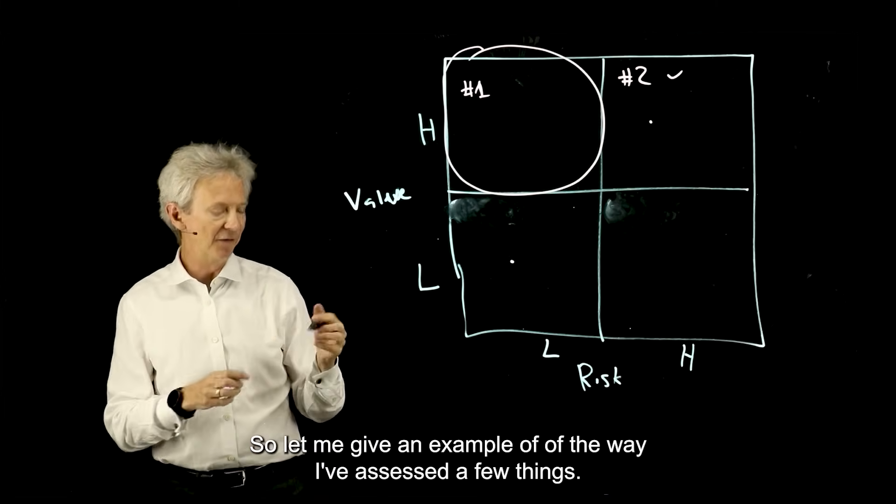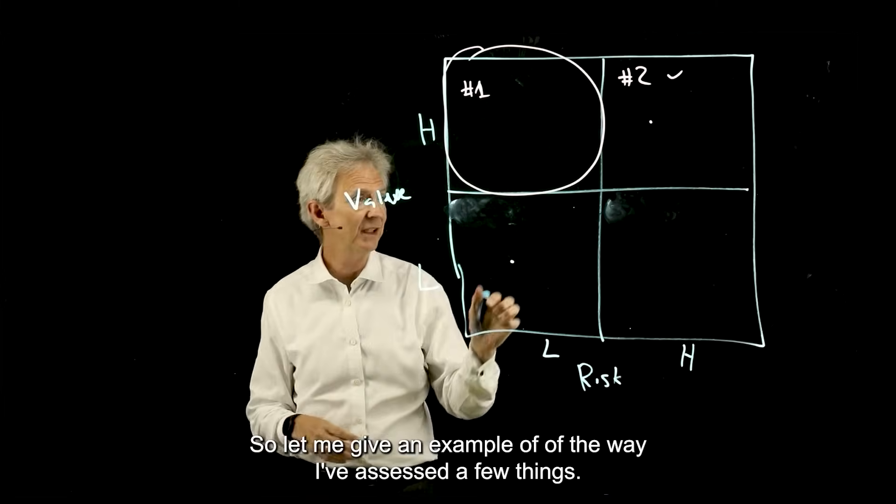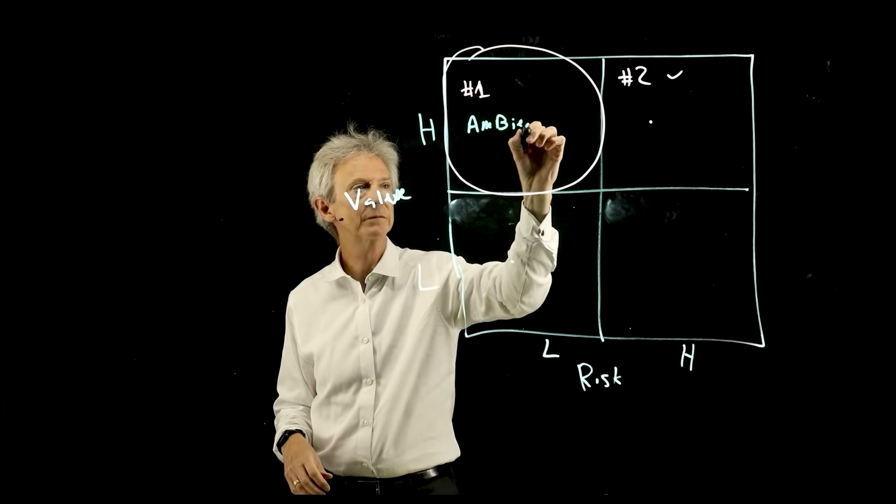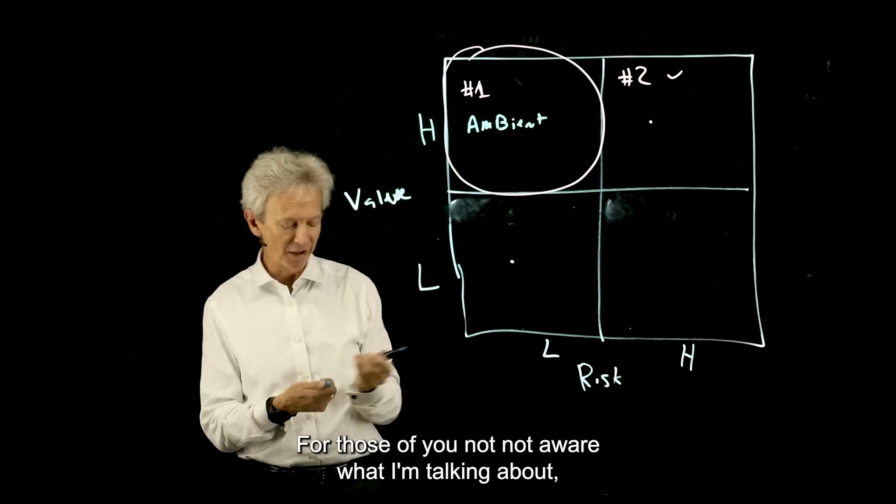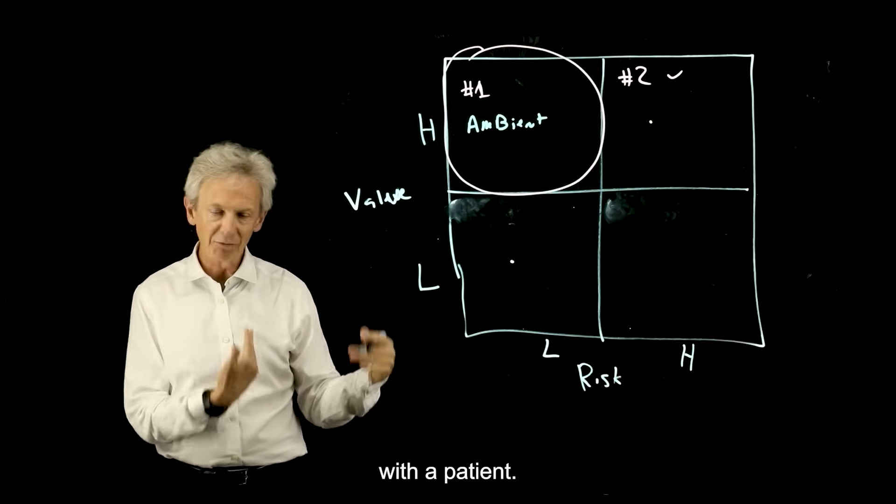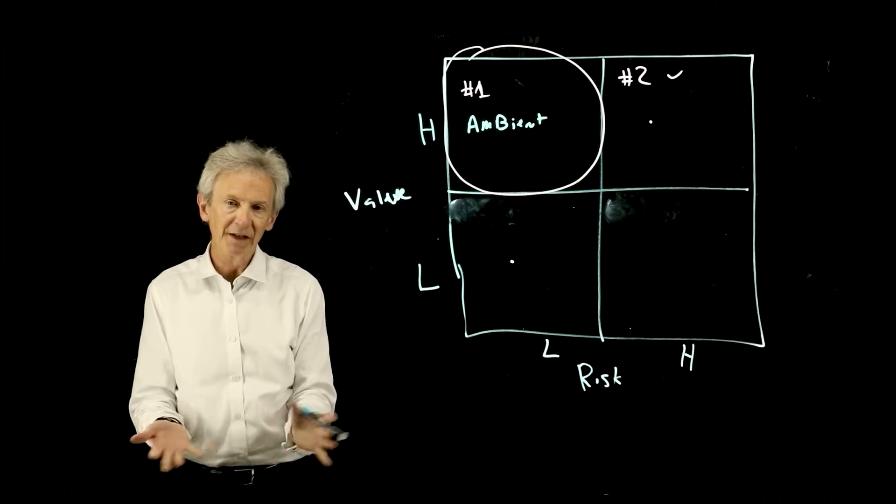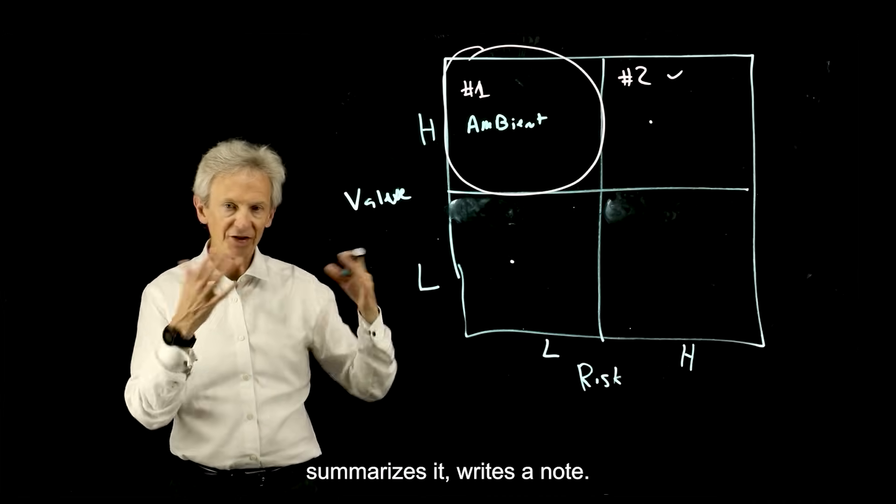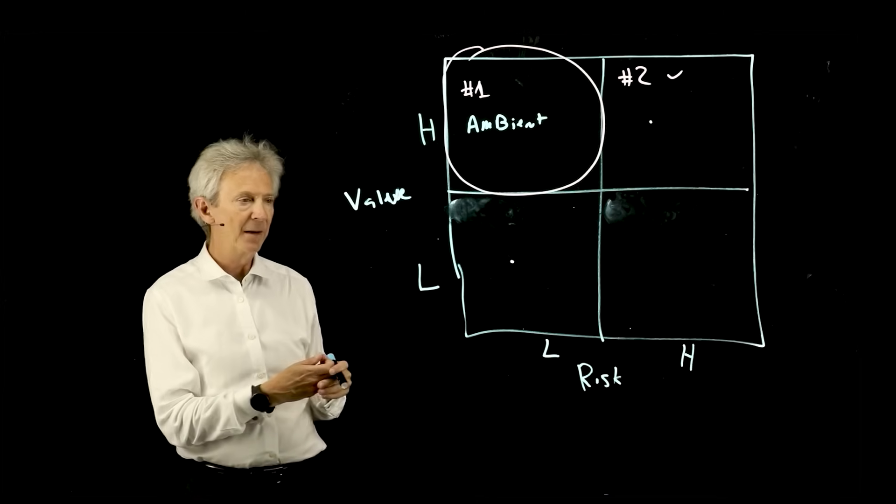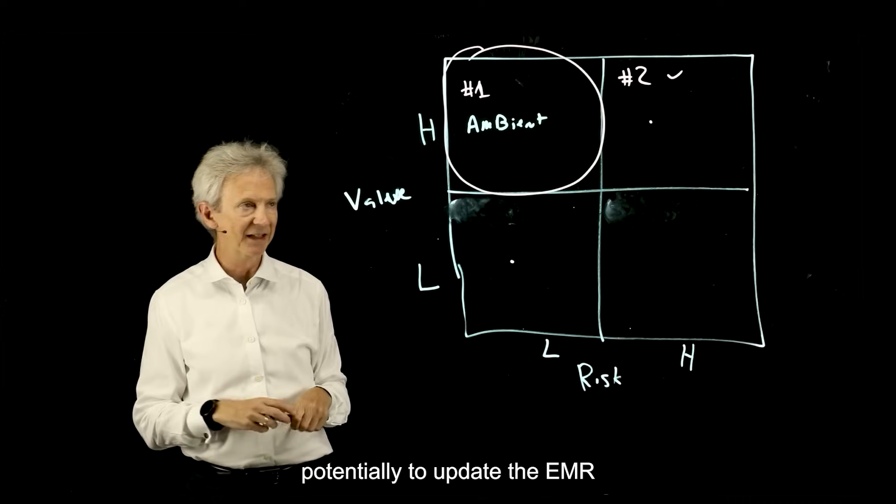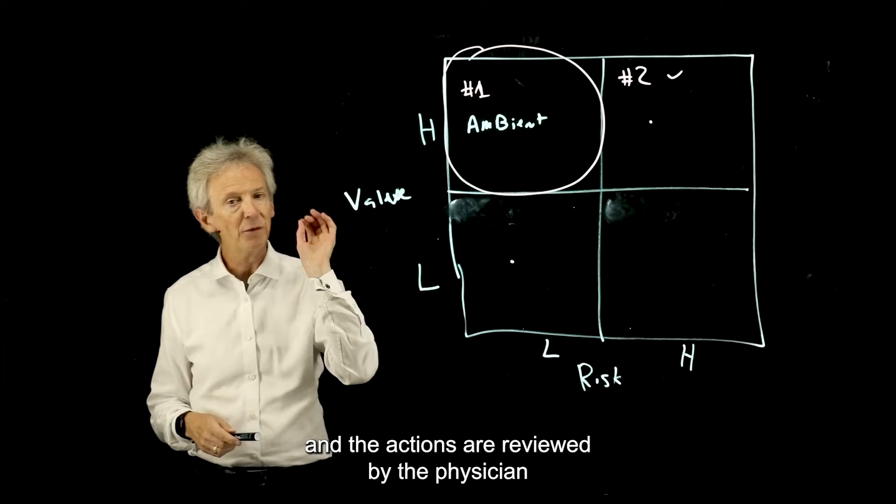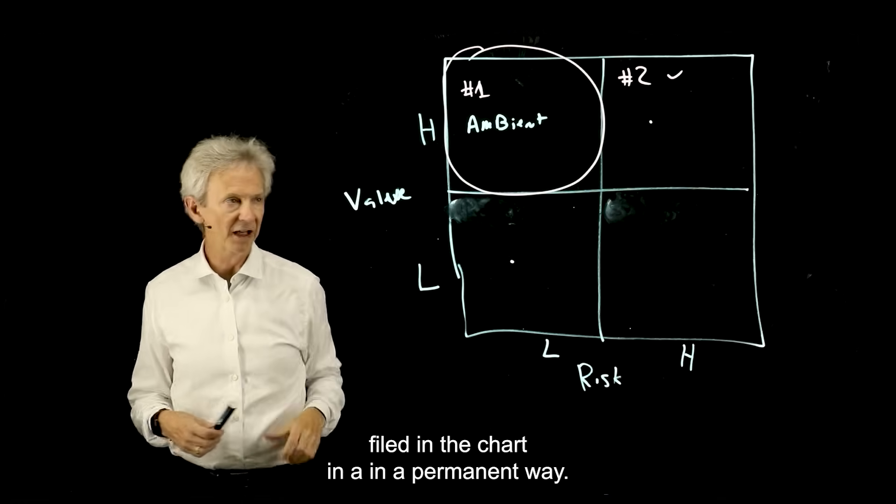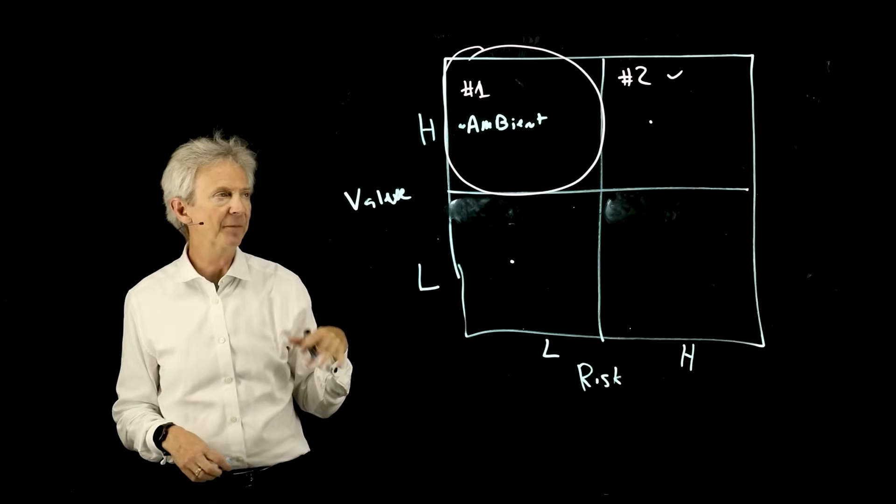Let me give an example of the way I've assessed a few things. Low risk, high value in healthcare is ambient. For those of you not aware of what I'm talking about, imagine a physician office visit with a patient, and there's a recording device in the room that's recording the visit with the patient's permission. Then generative AI takes that audio, transcribes it, summarizes it, writes a note, and then writes a bunch of actions potentially to update the EMR. This note and the actions are reviewed by the physician and signed by the physician prior to being filed in the chart in a permanent way. That's the ambient learning thing.